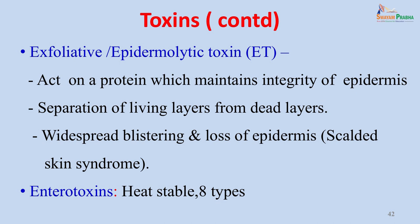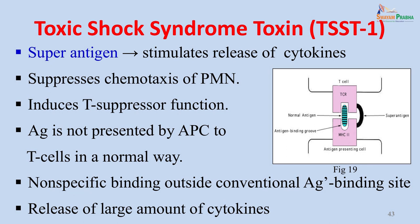Enterotoxins are heat-stable and cause toxic shock syndrome and food poisoning. The toxic shock syndrome toxin (TSST-1) causes one of the most severe manifestations because it is a superantigen. It suppresses chemotaxis of polymorphonuclear leukocytes, suppresses T-cell function, and causes non-specific activation of all T cells, producing a massive release of cytokines. Normally an antigen is presented in the groove of the MHC class II molecule to specific T-cell clones, but the superantigen TSST-1 attaches on the outside, connecting all T cells to MHC class II irrespective of their receptors. This results in a massive cytokine release causing severe damage, a profound fall in blood pressure, and the patient becomes critical.